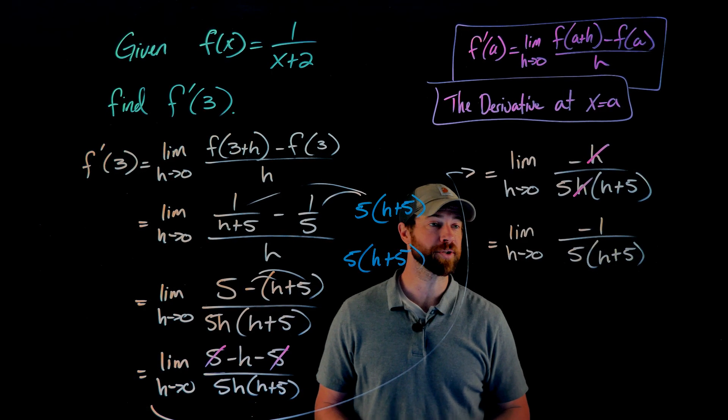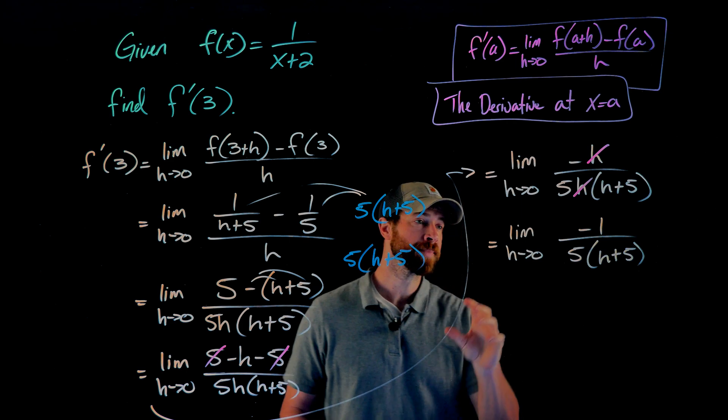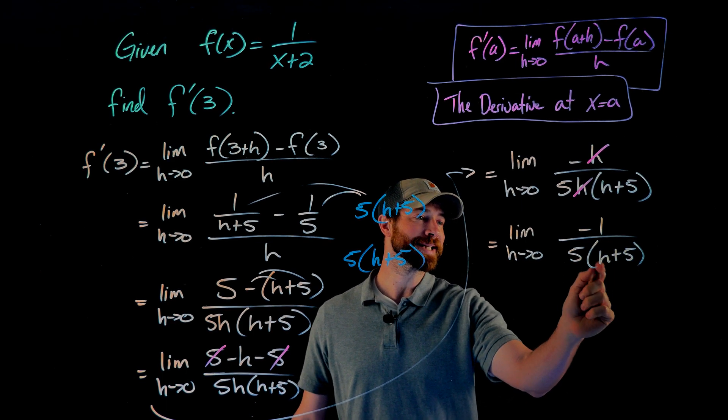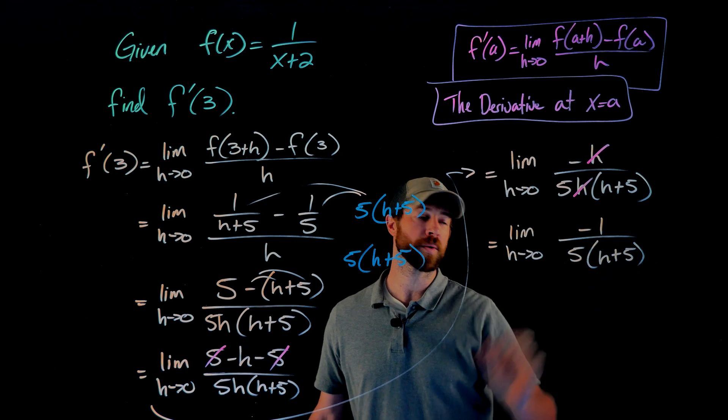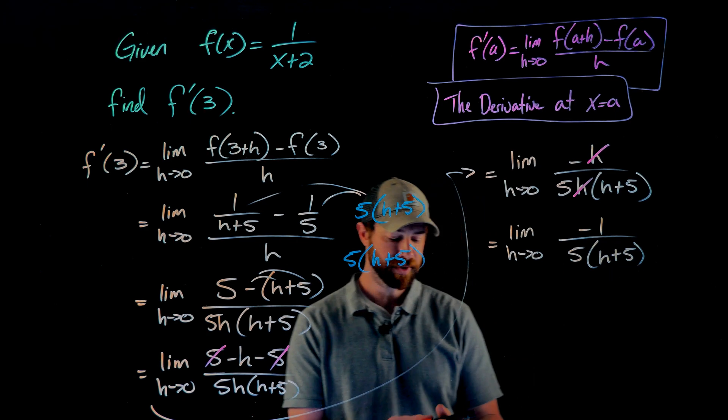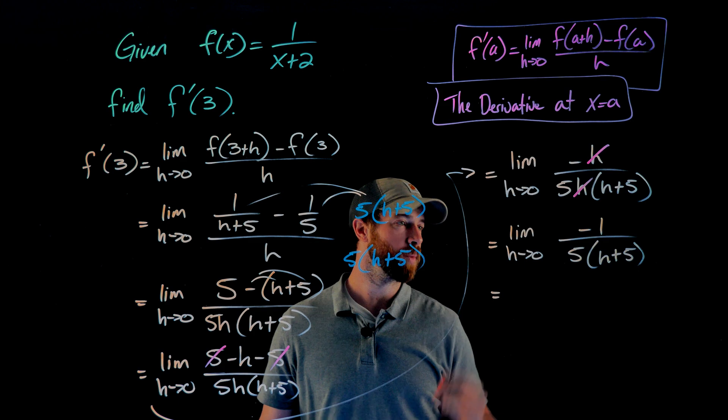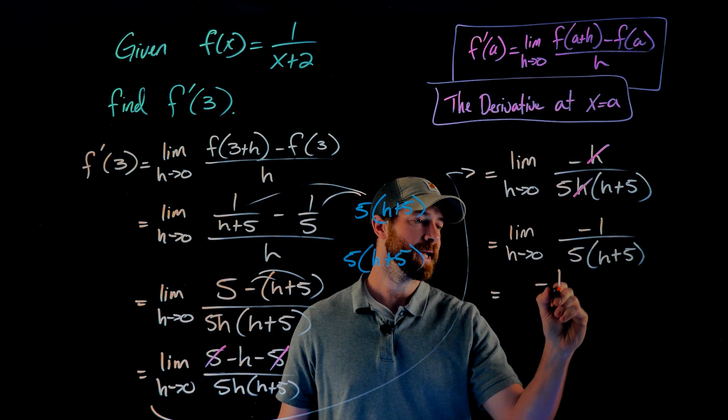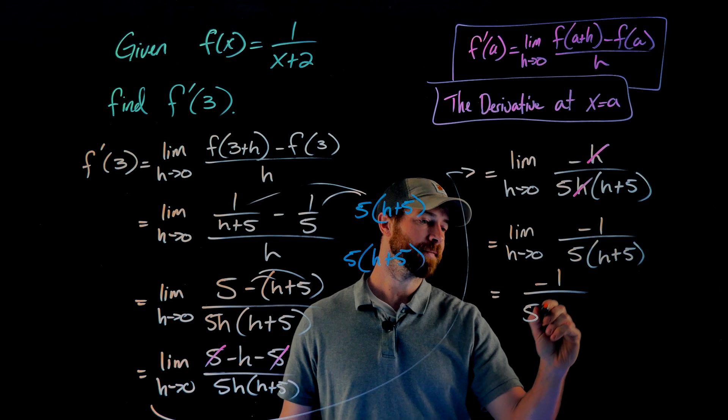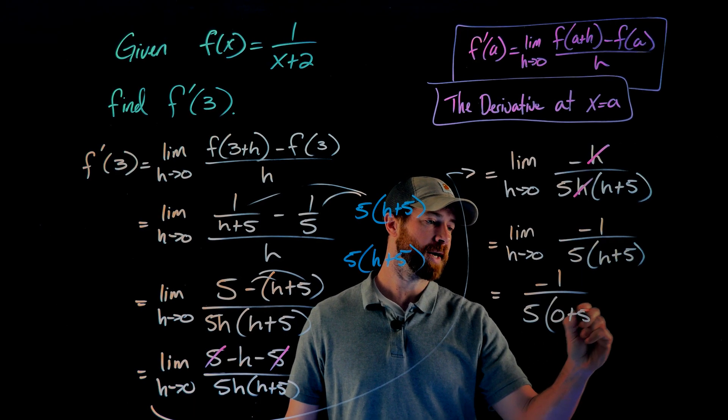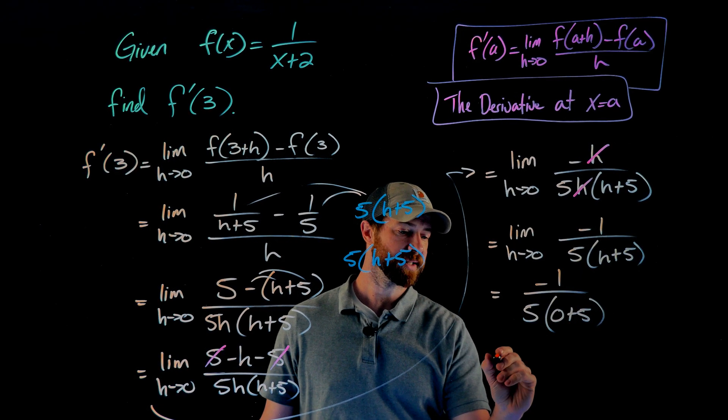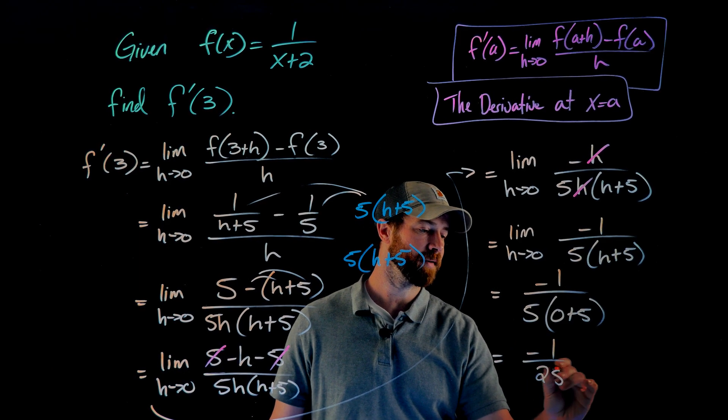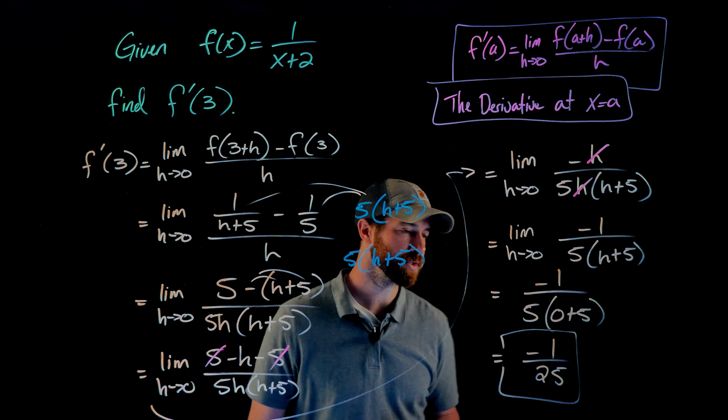And this is a really big deal. This is exactly what I was hoping for. I actually now can plug in h equals 0 into this because this denominator will not go to 0 when I plug in the 0 here. So this then becomes evaluated using direct substitution or an argument of continuity. I would get negative 1 over 5 times 0 plus 5, which then obviously simplifies down to negative 1 over 25 to give me negative 1 25th.